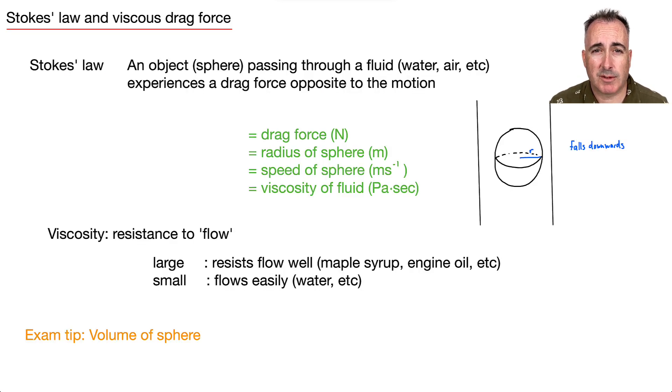If something's passing through a fluid, there's also going to be some drag force. If you're going through the air or water, there's a force going the opposite way. We call this Stokes' Law, and it's a viscous drag force. Stokes' Law says that an object—a sphere passing through a fluid like water or air—experiences a drag force opposite to the motion. This equation is in your data booklet. FD equals 6 times pi times eta times R times V. FD is your drag force opposite to motion. R is the radius of the sphere, V is the speed of the sphere in meters per second. And this Greek symbol eta is the viscosity of the fluid, measured in Pascal seconds.